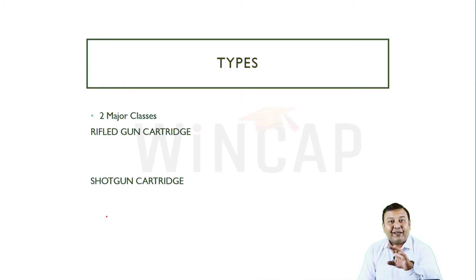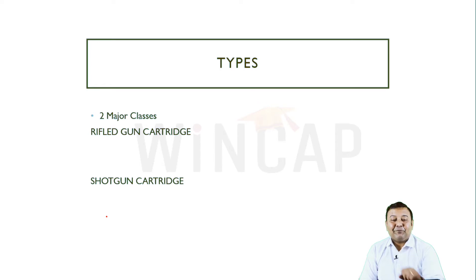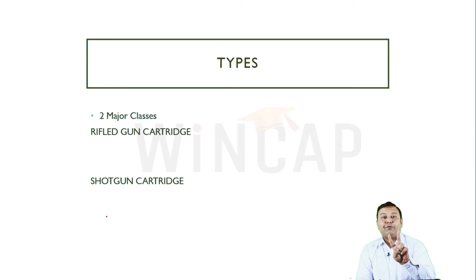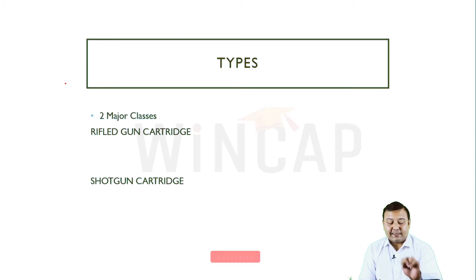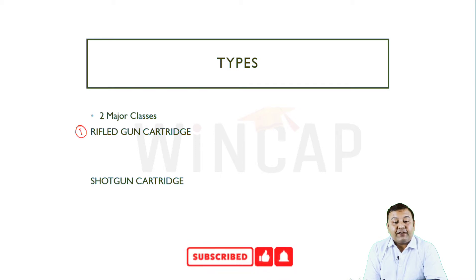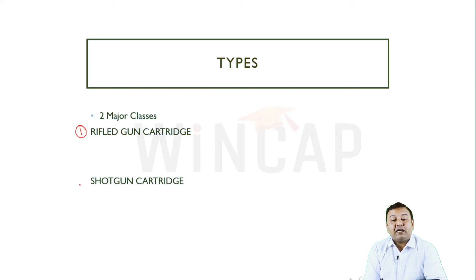By target, I don't mean the human body per se specifically. There are two major types of cartridges, similar to the two major types of guns. The first type is known as the rifled gun cartridge and the second is known as the shotgun cartridge.